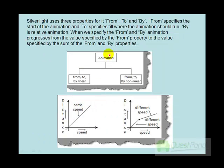Silverlight uses three properties for animation: From, To, and By. You can use two combinations: either From and To, or From and By. When you use From and To, it becomes an absolute animation. For example, if you say go from 0 to 100, that's completely absolute. When you use From and By, the animation progresses from the value specified by From to the value of From plus By, making it more of a relative animation.